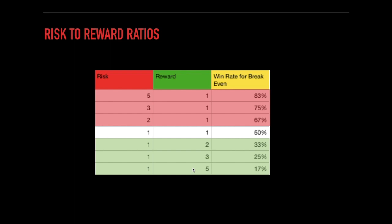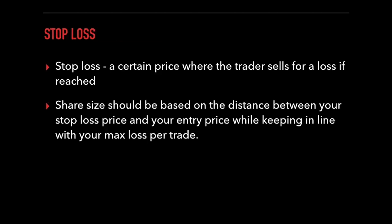Whereas if you had a negative risk-to-reward ratio — anything in this red area — you have to maintain such a high win rate just to break even. And having that type of pressure to need to win all the time may cause you to make a lot of mental mistakes.